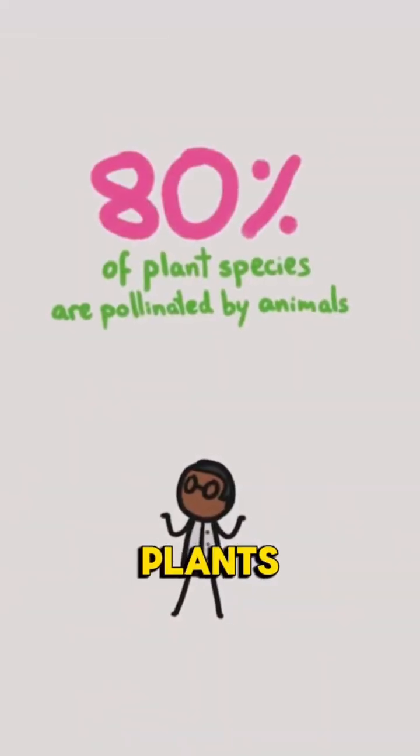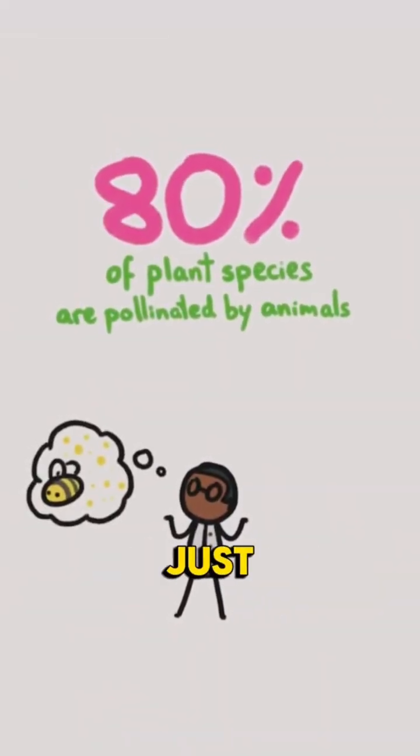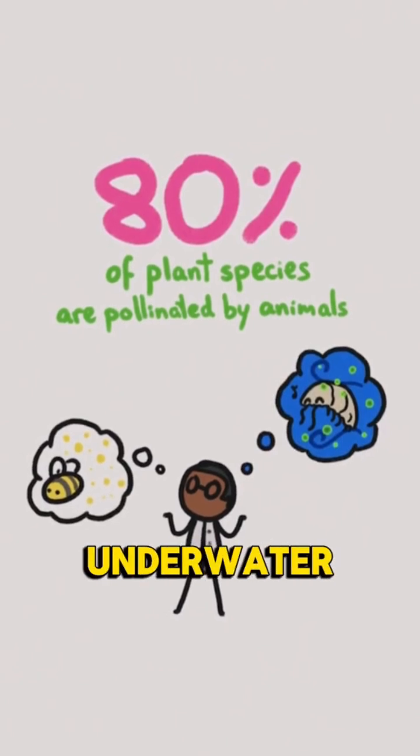Above land, 80% of plants are pollinated by animals, but we just found out that pollination happens underwater too.